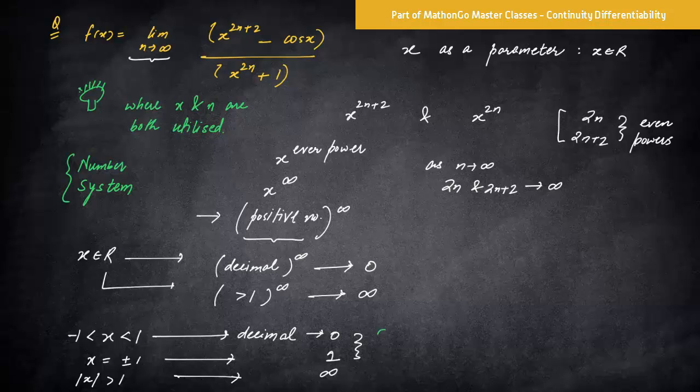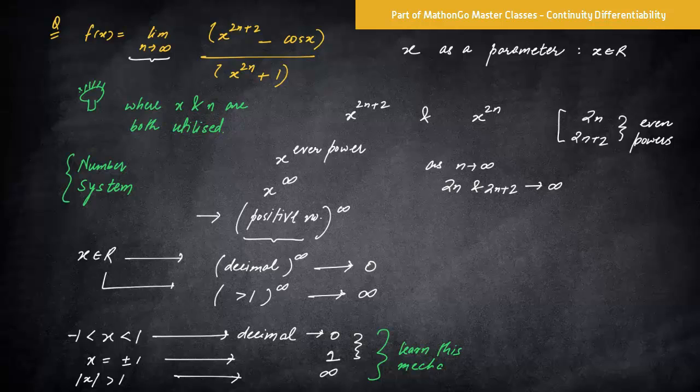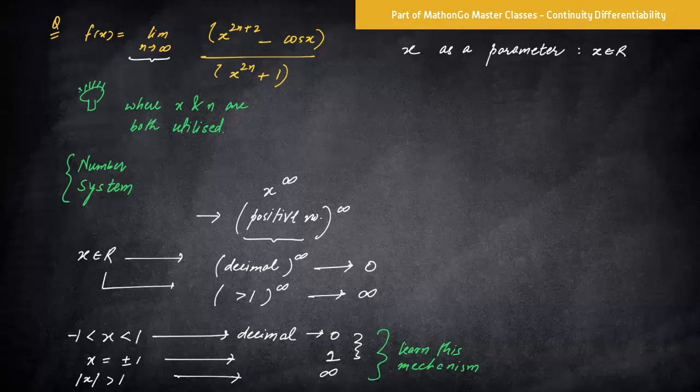Please understand this and somehow you can say learn this mechanism. Learn this mechanism because this is how we have to divide on the basis of the parameter, based on the values, decimal. Sometimes it has to be broken like this. So now let's see on the basis of all these three cases, what is the criteria. So now let's take the case one, then we will solve case wise.